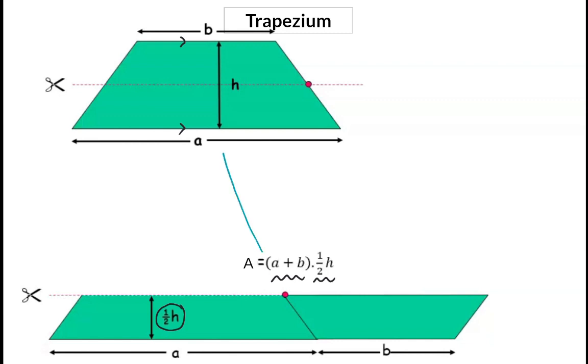And comparing this to our original trapezium, which of course has the same area, we will have the sum of the two parallel sides multiplied by half of the height. This height is the distance between the two parallel sides.